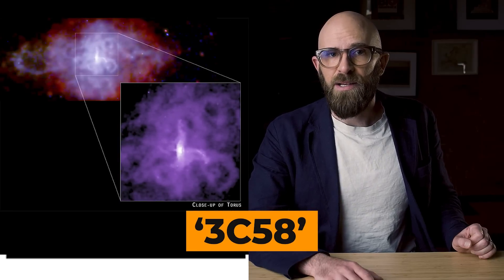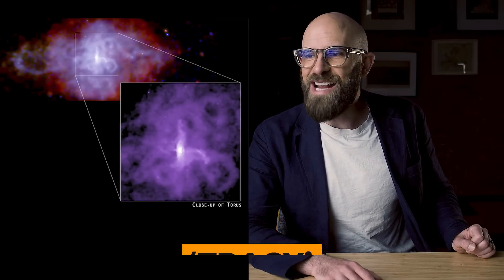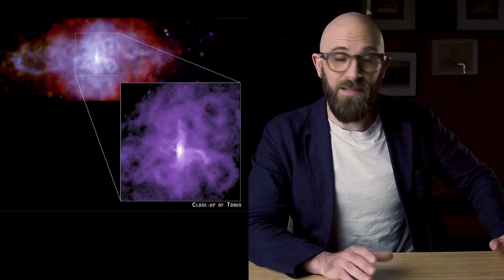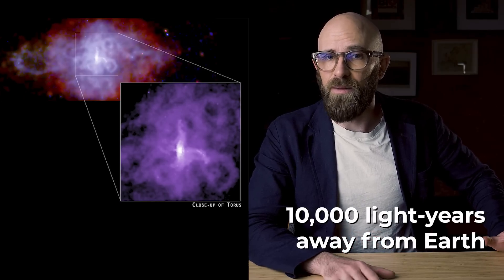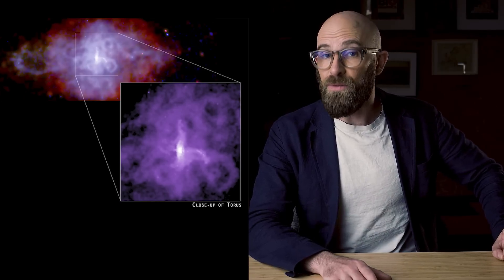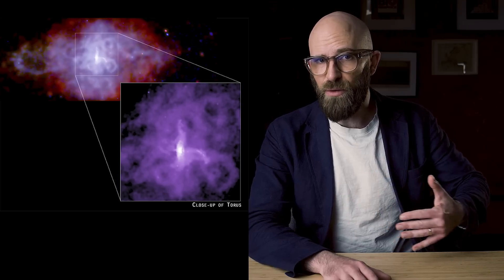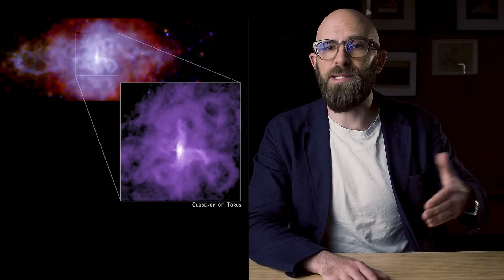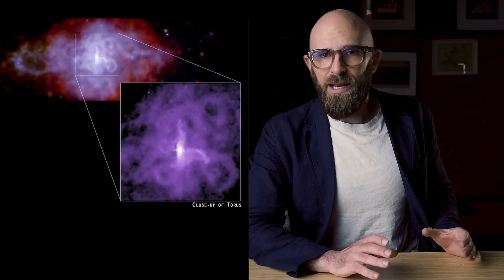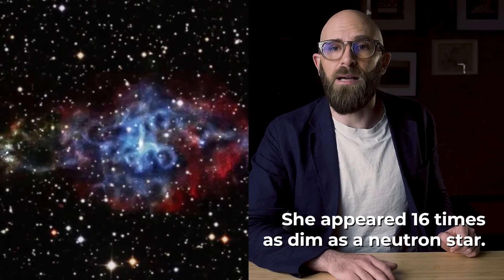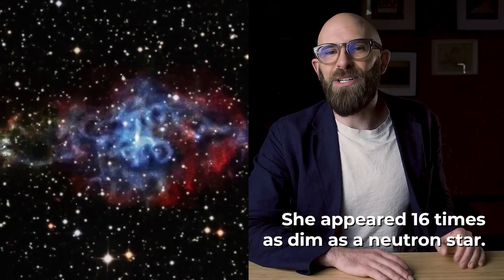One year later, the Chandra team struck again, conducting observations on 3C58 — let's call this one Tracy. Tracy appeared to shine at a distance of 10,000 light years in the constellation Cassiopeia, believed to be a neutron star born from a supernova documented by Chinese and Japanese astronomers in August 1181. In April 2003, Chandra observers found that Tracy had cooled down faster than expected from a neutron star, and appeared 16 times as dim — another possible candidate for a quark star.